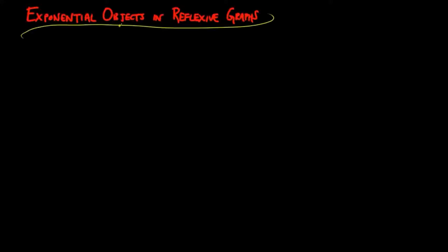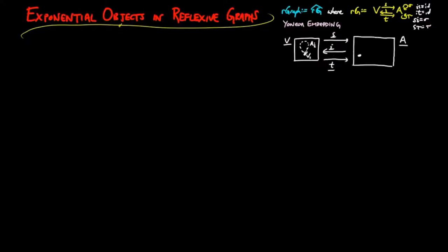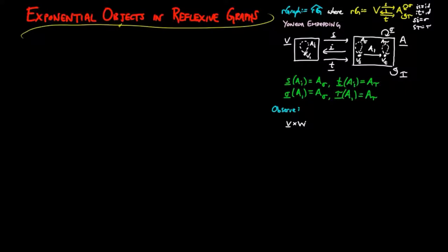Finally, we construct exponential objects in the category of reflexive graphs. Recall that by Oneda, there is an isomorphic copy of the category RG in the category of reflexive graphs. Observe that underline V cross W is isomorphic to W, since underline V is the terminal reflexive graph.